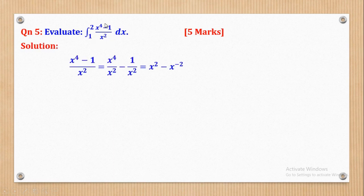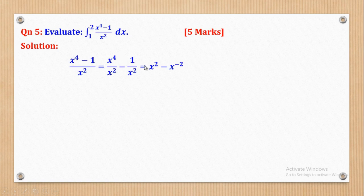First, split the numerator — each term in the numerator is divided by the denominator. So x⁴ divided by x squared gives one term, then minus 1 divided by x squared gives the other. Next we apply the rules of indices: same base, subtract the powers, so 4 minus 2 gives power 2. For the second term we apply negative indices — x² in the denominator becomes x to the power negative 2 in the numerator.